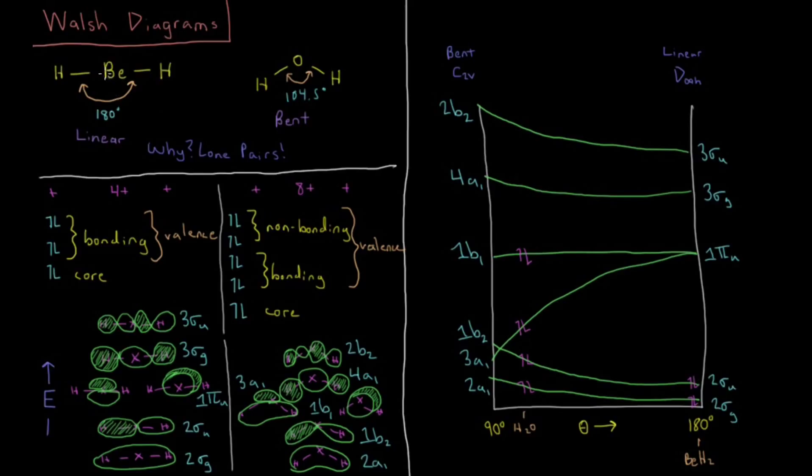So as I said we have the BeH2 molecule, the hydrogens are 180 degrees apart from each other, linear molecule in a straight line.